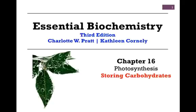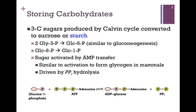Hello and welcome to our final video lesson on Chapter 16, Photosynthesis, in which we'll be considering the storage of carbohydrates in plants. The three-carbon sugars that are produced by the Calvin cycle, which we remember as glyceraldehyde-3-phosphate, are converted to either sucrose or starch.